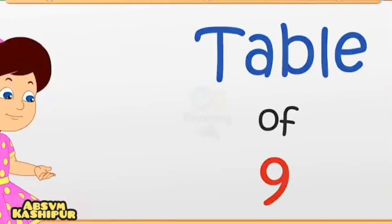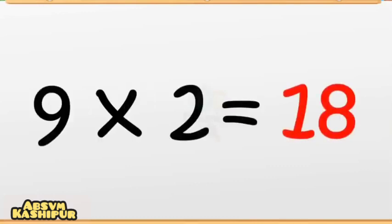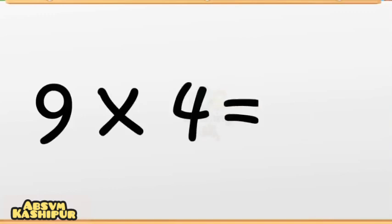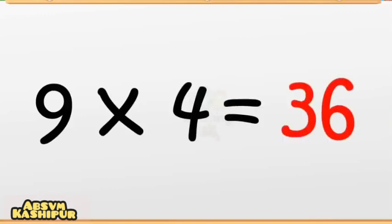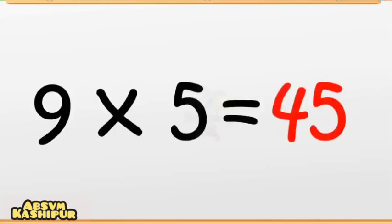Nine ones are nine. Nine ones are nine. Nine twos are eighteen. Nine twos are eighteen. Nine threes are twenty-seven. Nine threes are twenty-seven. Nine fours are thirty-six. Nine fours are thirty-six. Nine fives are forty-five. Nine fives are forty-five.